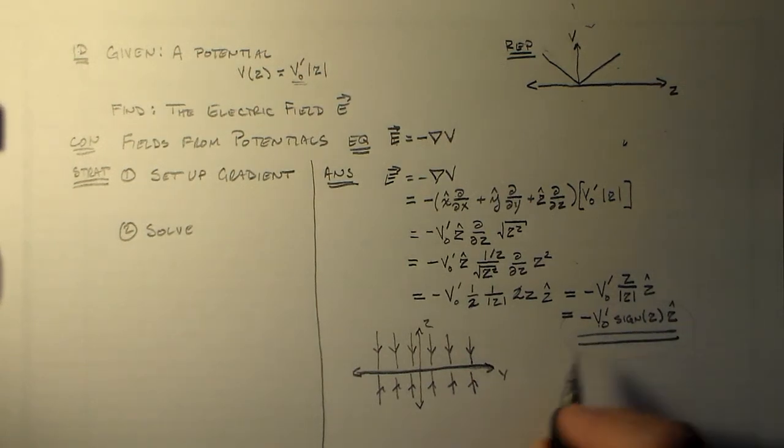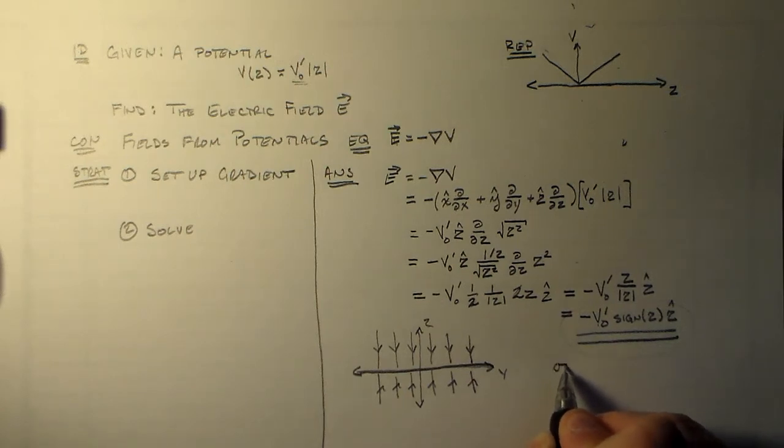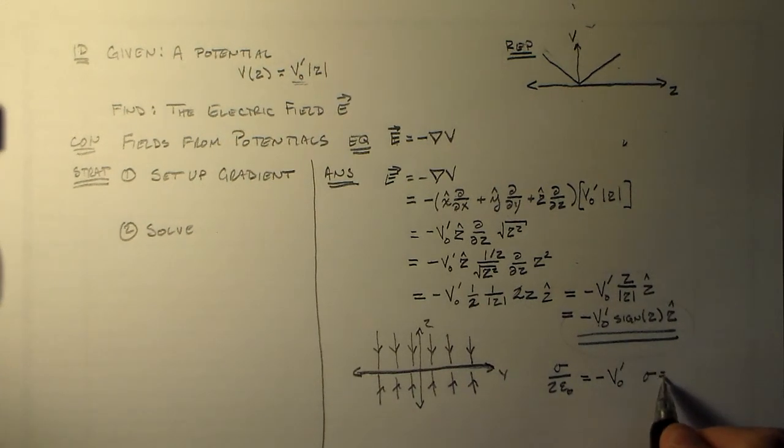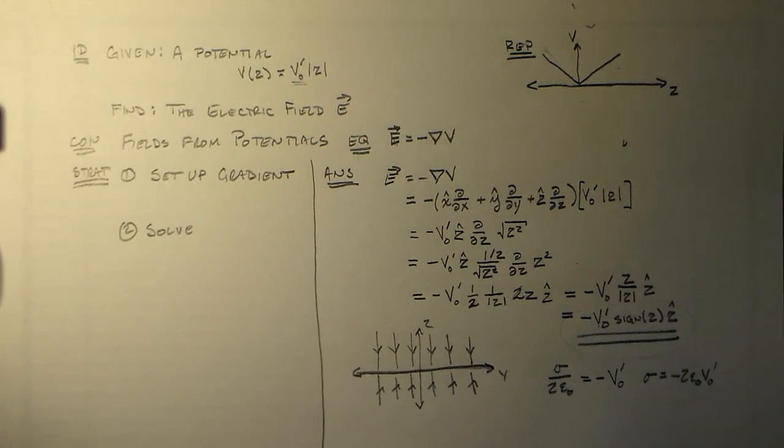And that looks exactly like what we've seen before when we've been looking at something with a charge, a uniform charge density. So it's a plane with a uniform charge density, and that's basically what we've got here. Only, instead of having sigma over 2 epsilon naught, right? If I recall correctly, and I do. That's equal to minus V naught prime, right? So, sigma is equal to minus 2 epsilon naught V naught prime.